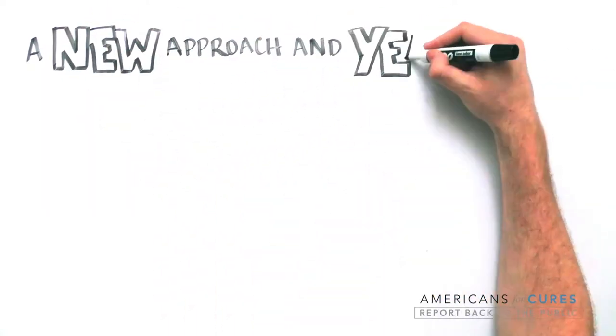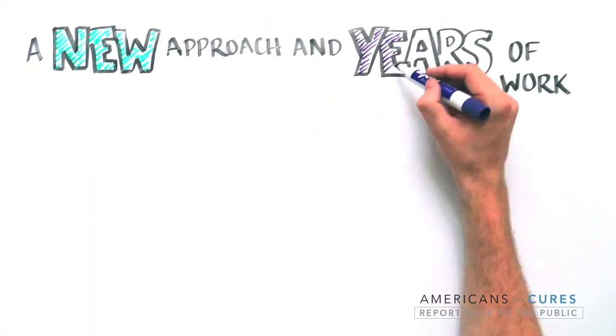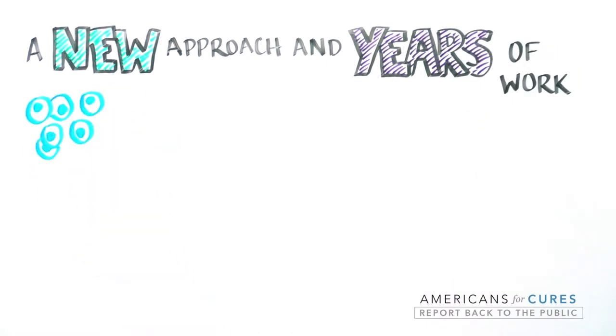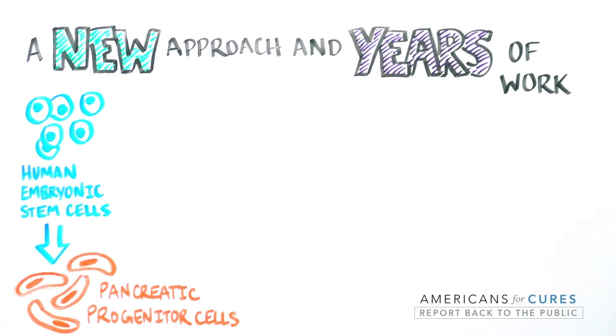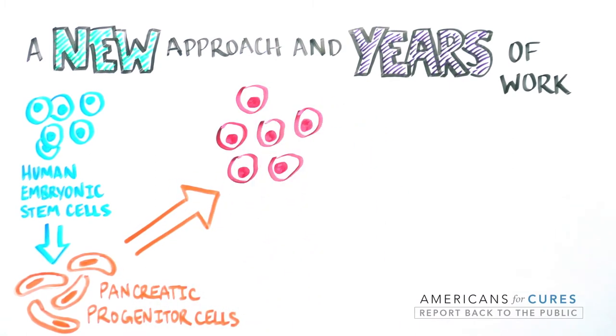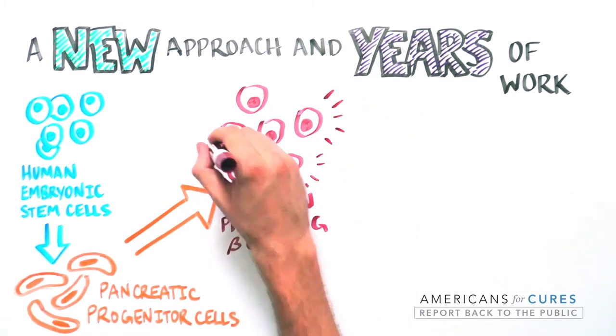After many years of work, Biocyte's scientific team, along with academic groups, figured out and perfected a recipe to turn human embryonic stem cells into pancreatic progenitor cells that are capable of maturing into fully functional, insulin-producing beta cells.